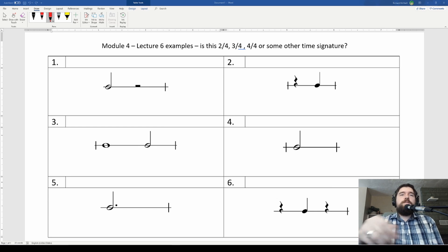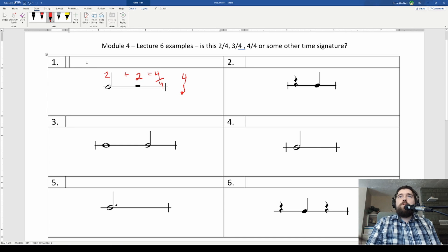All right, so taking a look at this first one, I'm going to count up how many beats I have total. So I have a half note, and that gets two beats. I have a half rest, that also gets two beats. Great, so what is 2 plus 2? That is 4. Now 4 is our top number if we have the quarter note on the bottom. So this is four quarter notes worth of time into one measure. So this one would be a 4/4 time signature.